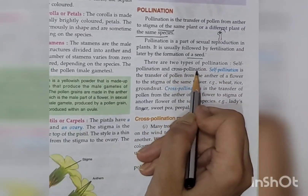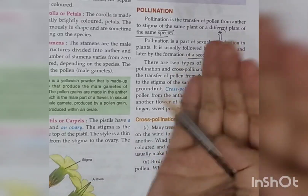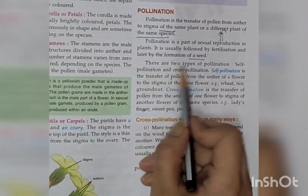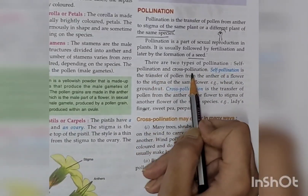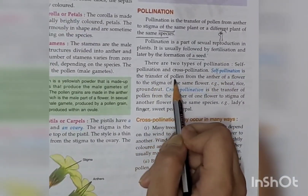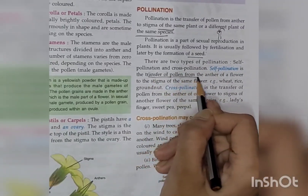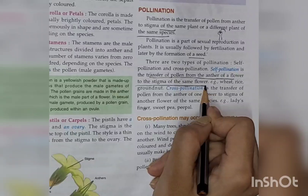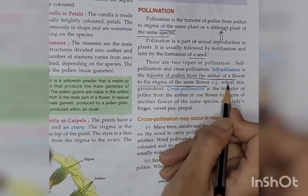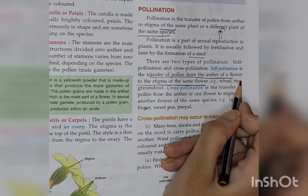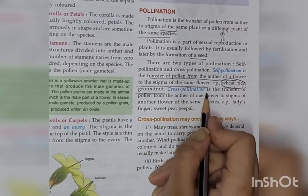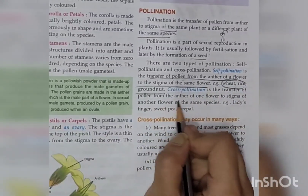There are two types of pollination: self-pollination and cross-pollination. Self-pollination is the transfer of pollen from the anther of a flower to the stigma of the same flower. Examples of self-pollinating plants include wheat, corn, and groundnuts.